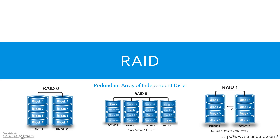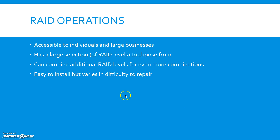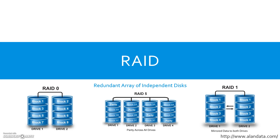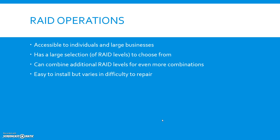RAID 1 can be thought of like a cloud drive, as the data is duplicated — this is called mirroring. There's also RAID 5, which uses parity across all drives. Extra copies are made from one drive to another, with different partitioned data, and parity checks are required to make it much more safe.